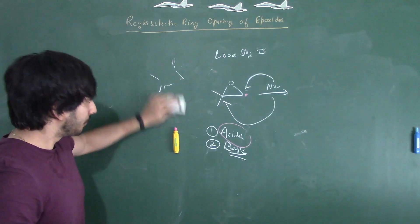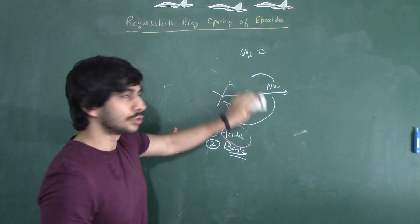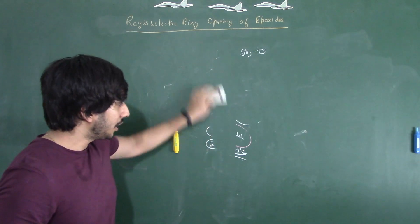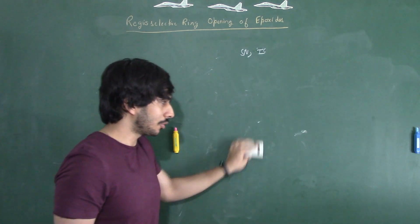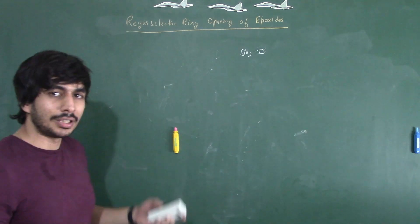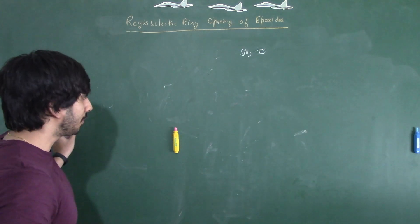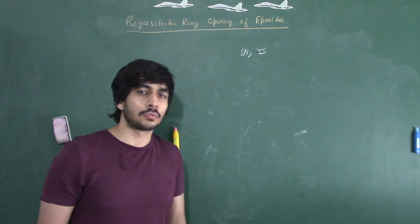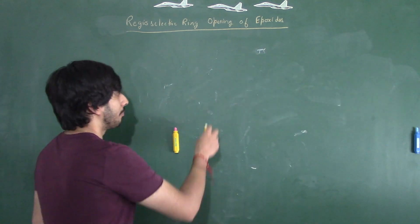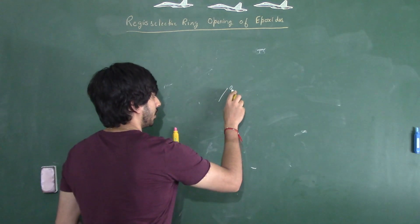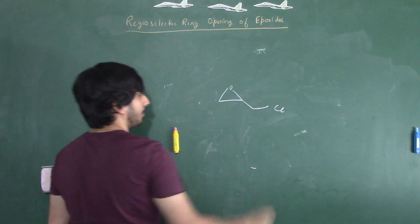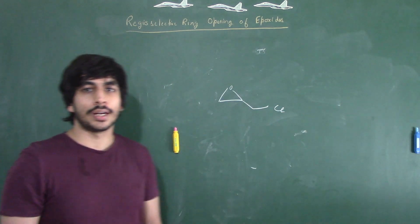So for exam purposes: in acidic conditions, attack is from the side where the cationic transition state is more stabilized, which will mostly be the more hindered side; in basic conditions it will attack from the less hindered side. This is the basic principle of ring opening of epoxides. Now the question is, what if questions come? We will discuss two or three questions. One important example I would like to take is epichlorohydrin.